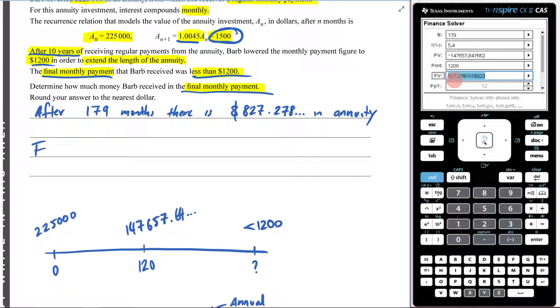So now we have to figure out the final monthly payment. And this is where I imagine most people would have made the mistake. Most people would have just said, well, you get $827.278, you know, whatever is left in there, right?